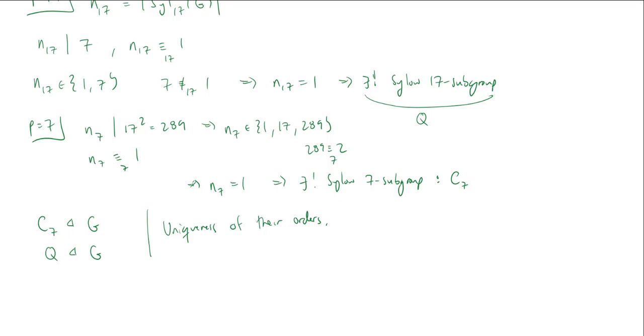So within these orders, there's a unique subgroup of order 289, a unique subgroup of order 7, so they must be normal. But they're also going to intersect trivially. Is that obvious? Well, we know by Lagrange's theorem that this intersection has to have order that divides both C_7 and Q's orders.